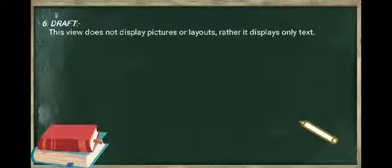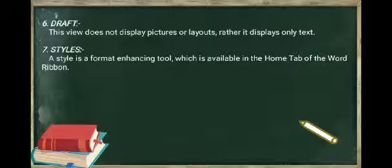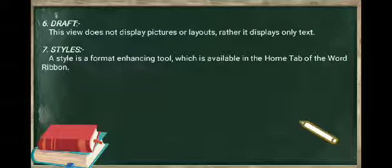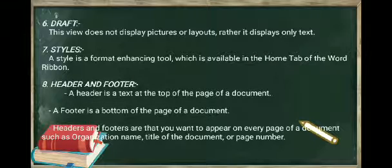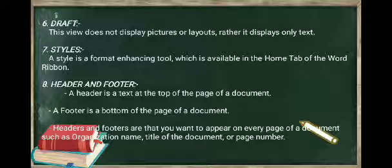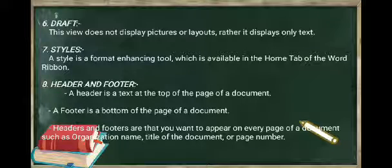Next is about styles in MS Word. A style is a format enhancing tool which is available in the home tab of the Word ribbon. Header and footer - a header is text at the top of the page of a document. On the other hand, a footer is at the bottom of the page of a document. Headers and footers are what you want to appear on every page such as organization name, title of the document or page number.